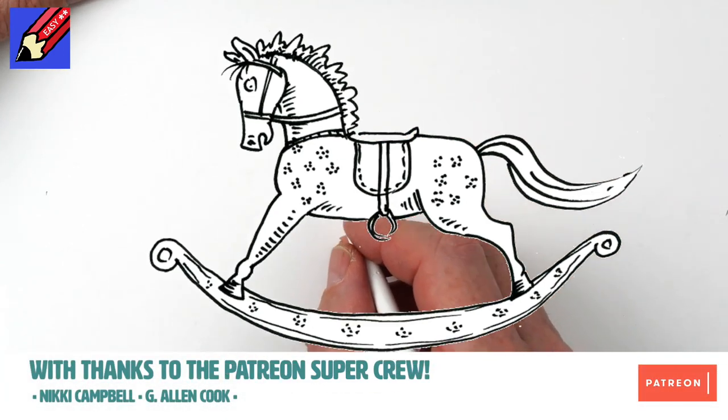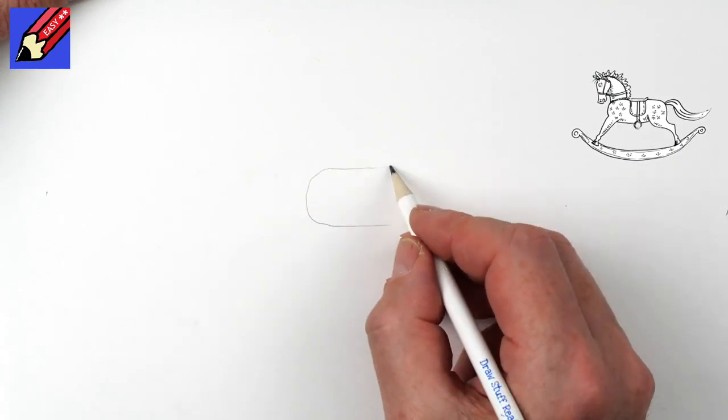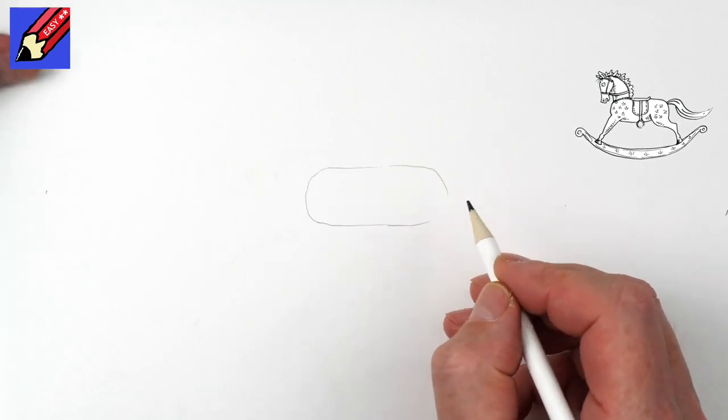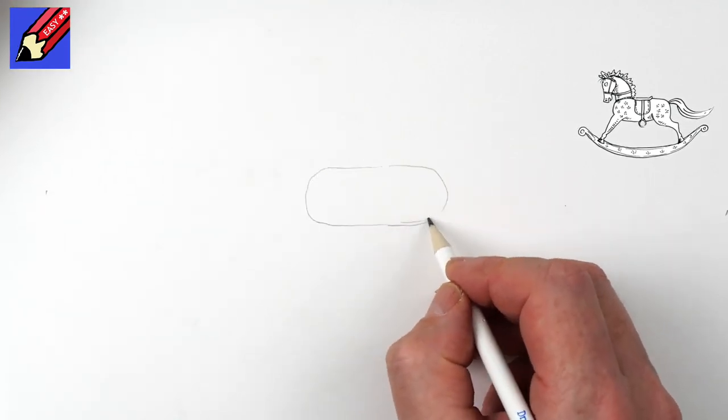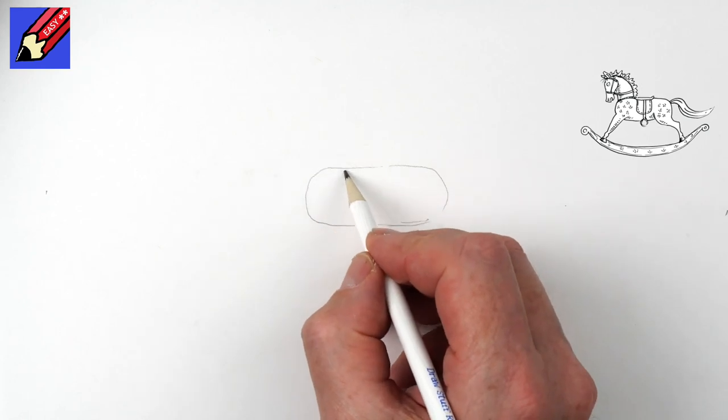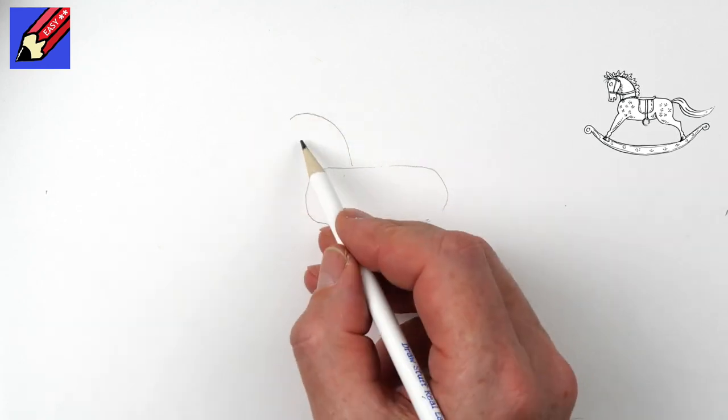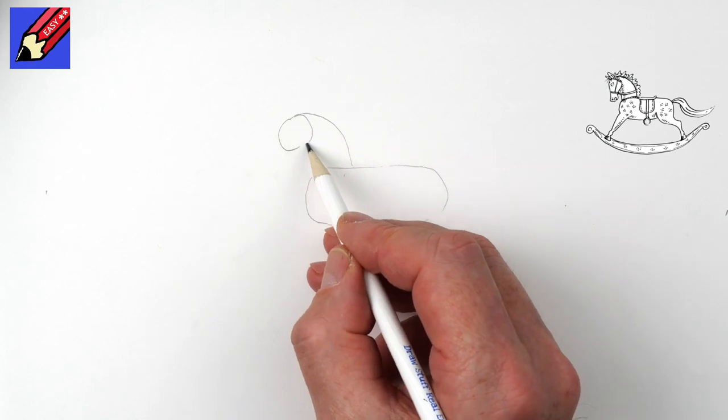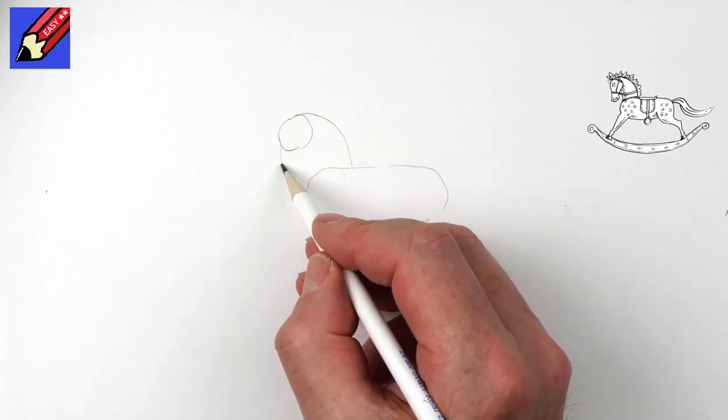Okay, I'm going to start with a very basic plan. Draw this kind of lozenge shape like that, and then we're going to come up in a curve like that and around, and then we want to come down.